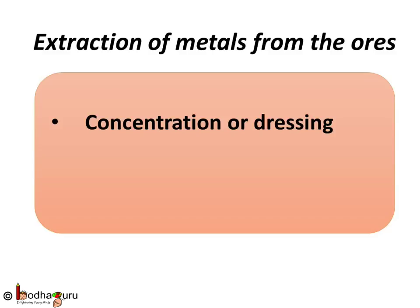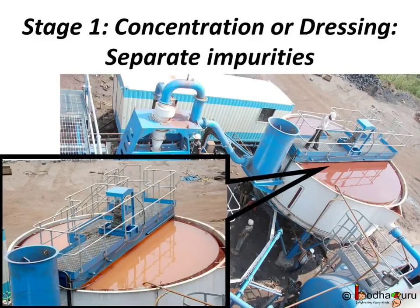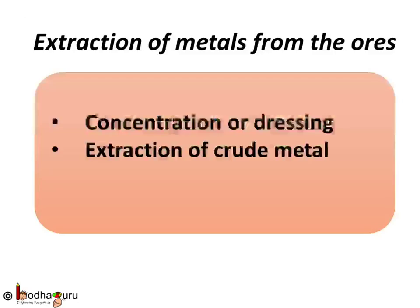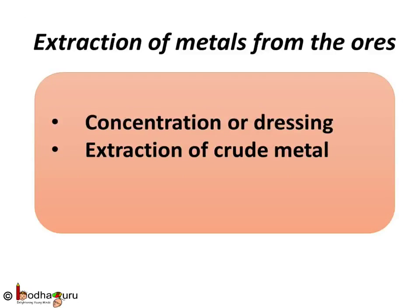Stage 1 is concentration or dressing. In this stage, the impurities are separated as much as possible. Impurities like rock, clay, and sand are separated easily, and this process is also called enrichment of ore.